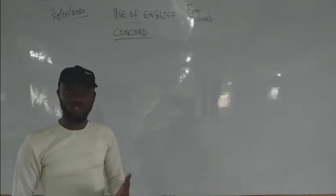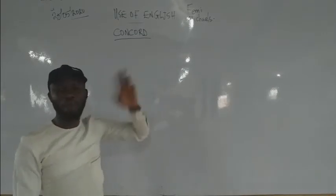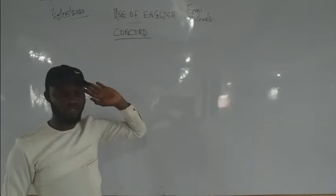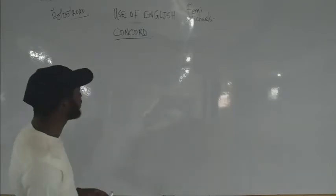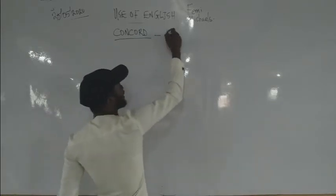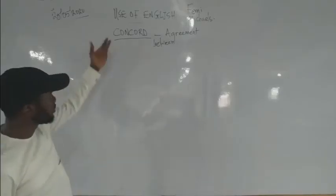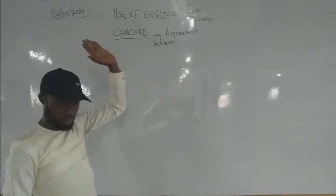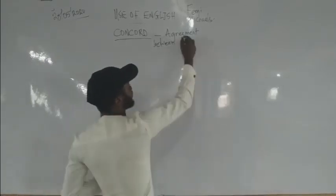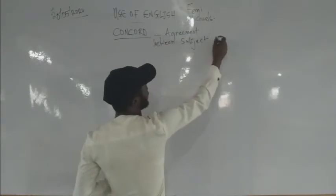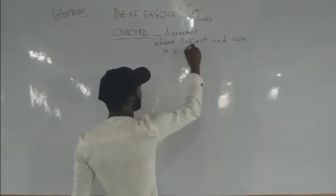Sometimes when you read the definition of a topic it becomes so difficult that you are better off not knowing the topic. What we are trying to do is make it as simplified as possible. Concord is an agreement between the subject and the verb in a sentence.